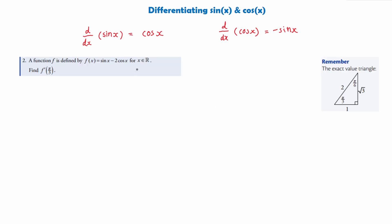When doing questions involving sine and cos with differentiation, it's important that we remember our exact value triangles. The next example says: a function f is defined by f of x equals sin x minus 2 cos x for all real values of x. So this time we've got two terms involving sine and cos. The second part of the question also asks us to find the derivative of the function when x is equal to pi over 3, so we'll be using our exact value triangles, particularly if this is a non-calculator paper.